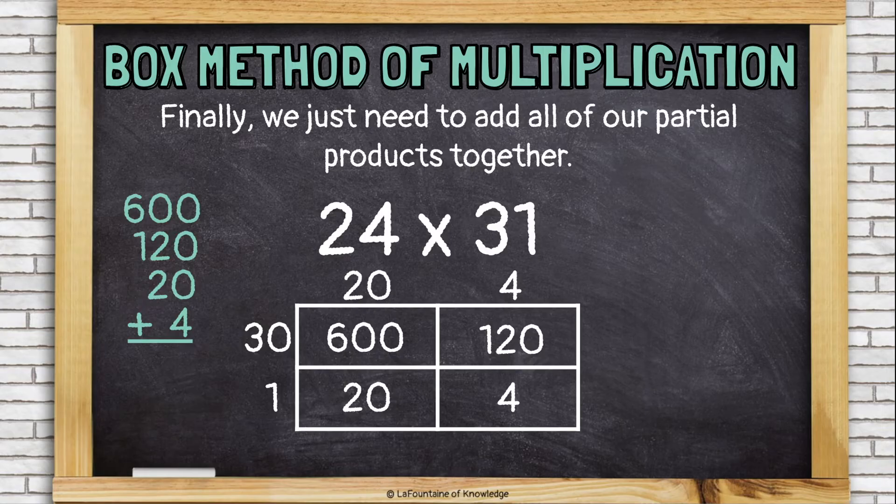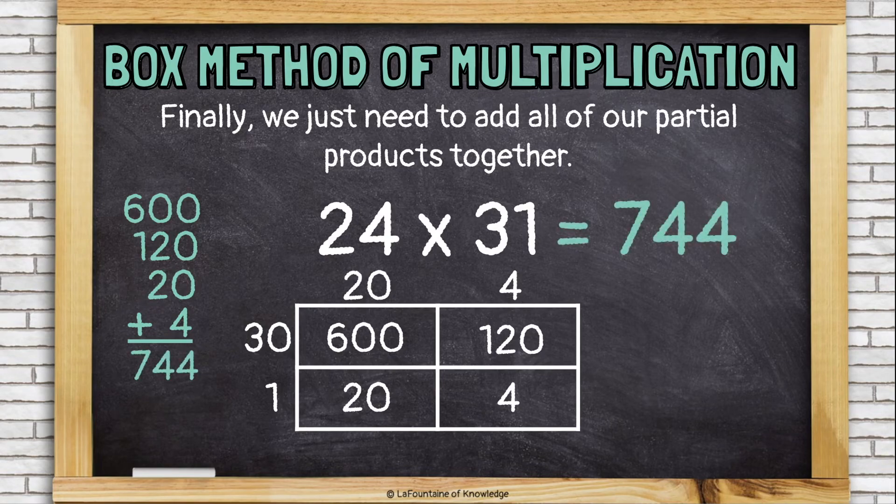So, if you have trouble with that, you should add 600 plus 120 and see what that is. And then add 20 to it. See what that is. And then add 4 more. I'm going to go ahead and add them all together like this. And my answer is 744.